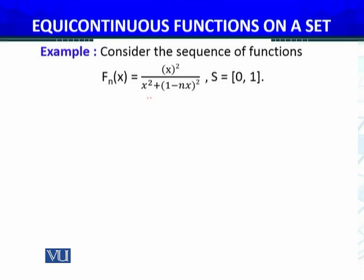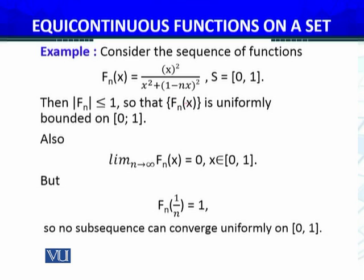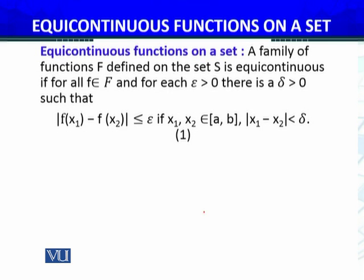Consider another sequence of functions over the domain S = [0, 1]. We know that |f_n(x)| < 1 because x² is in the numerator and x² plus something positive — specifically (1 − nx)² which is positive — is in the denominator. So |f_n(x)| ≤ 1, meaning f_n is uniformly bounded on [0, 1]. Also, the limit as n → ∞ of f_n(x) is 0, which you can verify. However, when you evaluate f_n at x = 1/n, you get 1 for every n. This means no subsequence can converge to 0 on [0, 1].